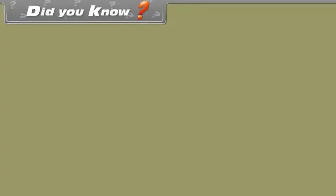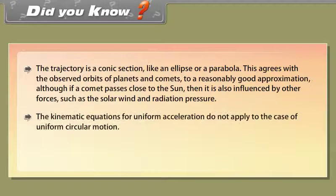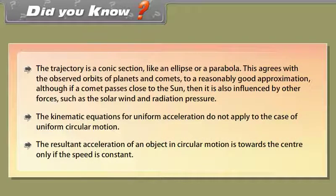Did you know? The trajectory is a conic section like an ellipse or a parabola. This agrees with the observed orbits of planets and comets to a reasonably good approximation. Although if a comet passes close to the sun, then it is also influenced by other forces such as the solar wind and radiation pressure. The kinematic equations for uniform acceleration do not apply to the case of uniform circular motion. The resultant acceleration of an object in circular motion is towards the center only if the speed is constant.